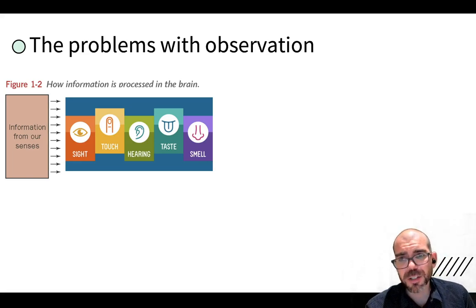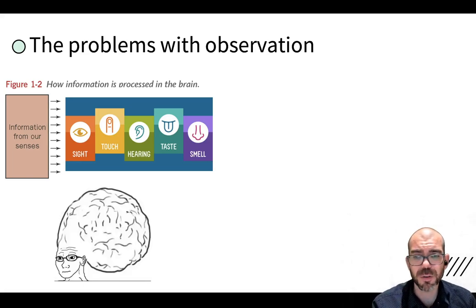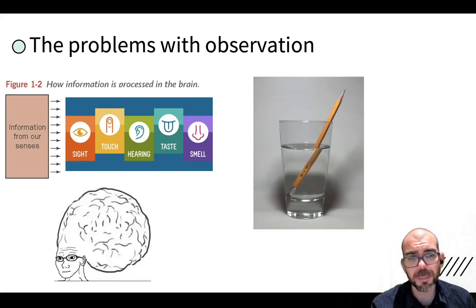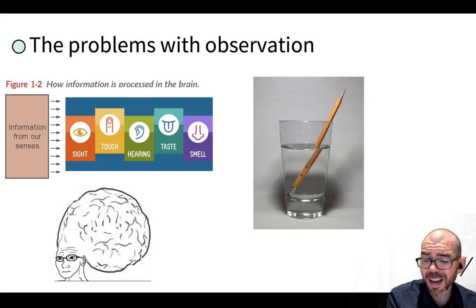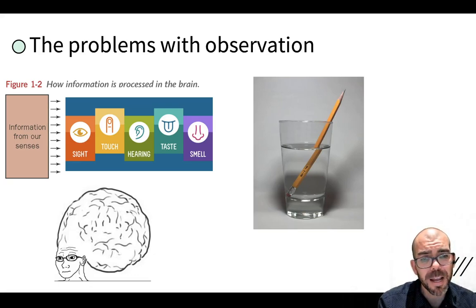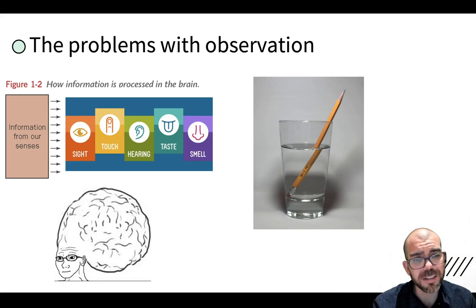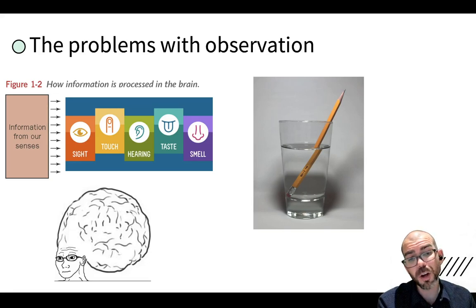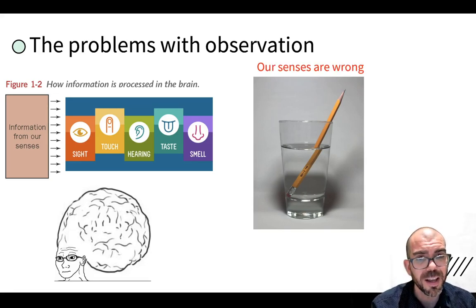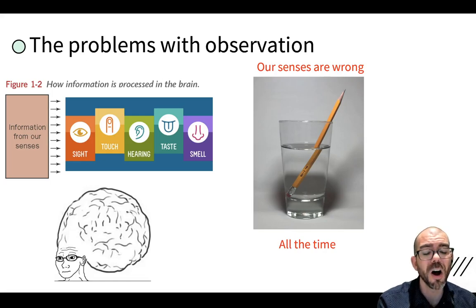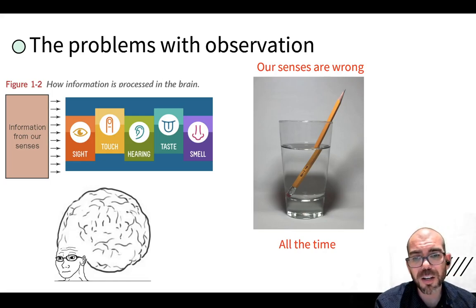Here's the problem with observation. If you look at how it's processed in your brain, the first thing is you get information from your senses. You, being the big-brained person you are, believe anything your senses tell you, right? Well, how do you explain this? This looks to your eyes like a pencil that's been bent in water. Hopefully intuitively you know that's not the case — that's your eyes playing a trick on you. Our senses are wrong all of the time.